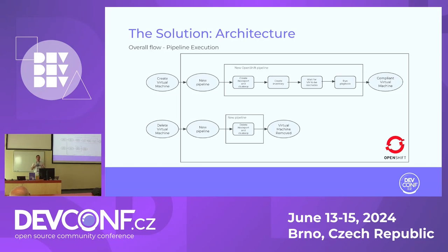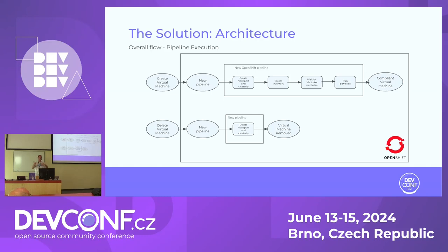When the pipeline is executed after a VM is created: a new pipeline is spawned, we expose the VM via a NodePort, make it compliant, and give it a domain name in the internal DNS. The Tekton pipeline waits for the VM to be up and running, then runs an Ansible playbook to make it compliant. There's also a specific workflow for VM deletion — for example, ensuring the DNS record is removed when a VM is deleted.